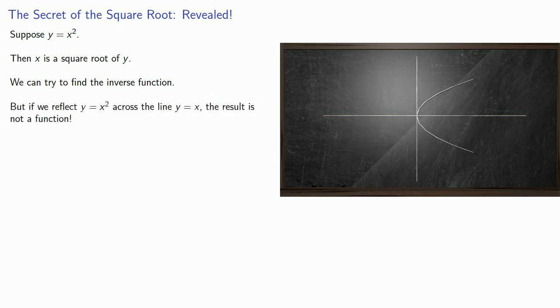But if we reflect y equals x squared across the line y equals x, the result is not a function of x. Because we see that in general, any x value corresponds to two different values of y.